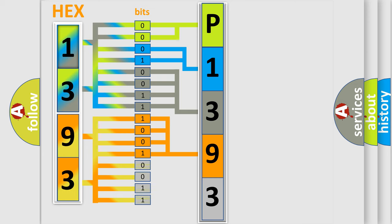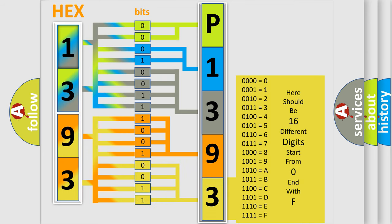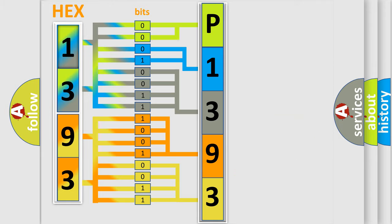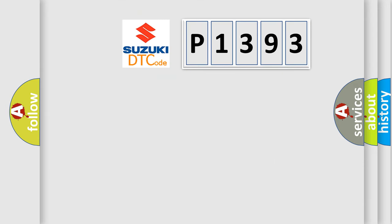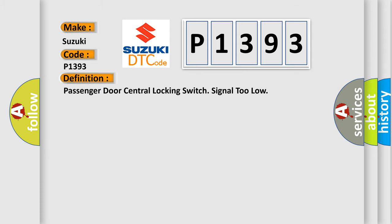A single byte conceals 256 possible combinations. We now know in what way the diagnostic tool translates the received information into a more comprehensible format. The number itself does not make sense to us if we cannot assign information about what it actually expresses. So, what does the diagnostic trouble code P1393 specifically interpret for Suzuki car manufacturers? The basic definition is: Passenger door central locking switch signal too low.